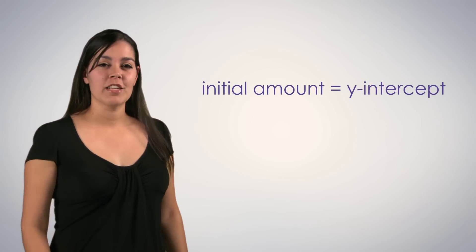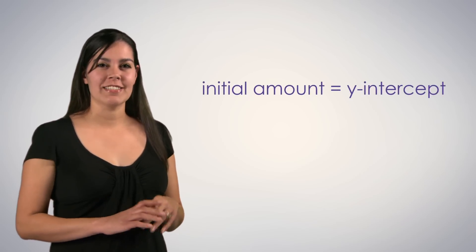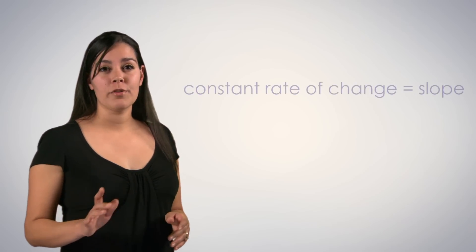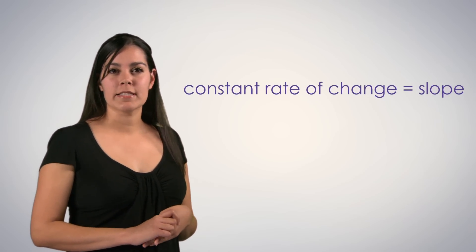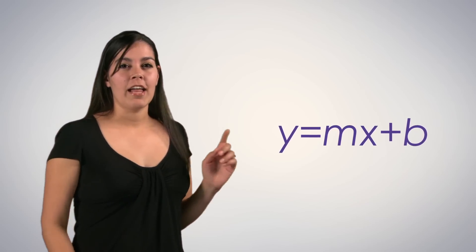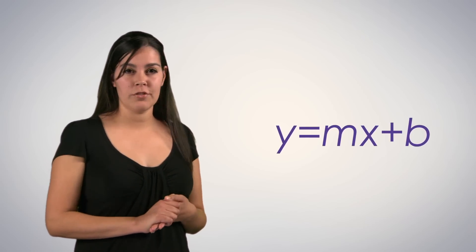In the last video, we learned that the initial amount found in a function is the same as the y-intercept on a graph, and that the constant rate of change in a linear function is the same as the slope of the graph. In doing so, we discovered the true value of y equals mx plus b, and how its form can help us quickly turn a linear function into a graph. In this video, we will build on these skills focusing on how to rewrite linear functions into the slope-intercept form, and how to analyze a graphed line in order to write the function that produced it.